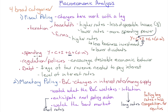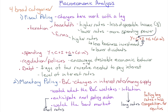Government spending affects the G component of output — recall that output equals consumption plus investment plus government spending plus net exports. More spending means higher GDP growth and more job creation.